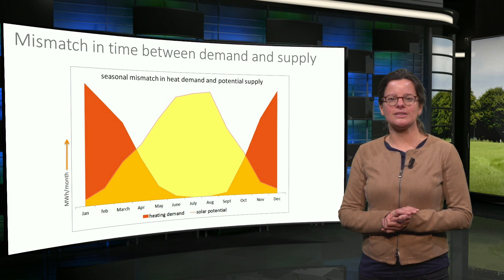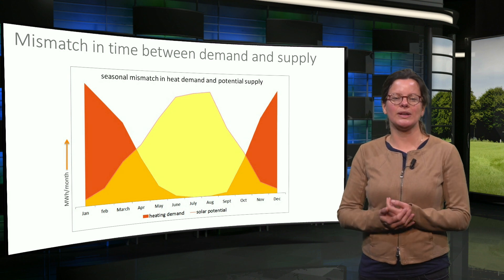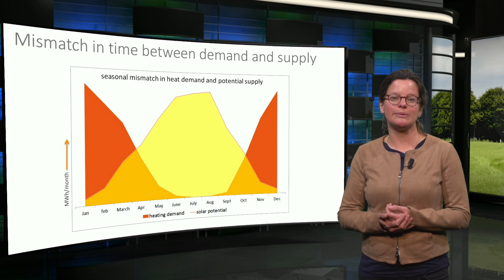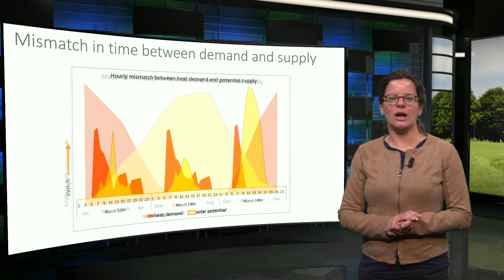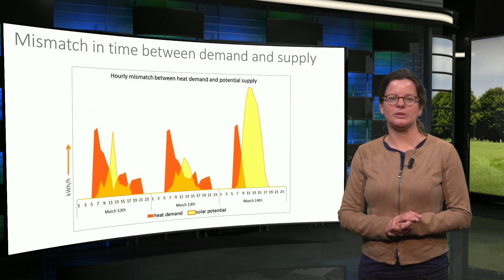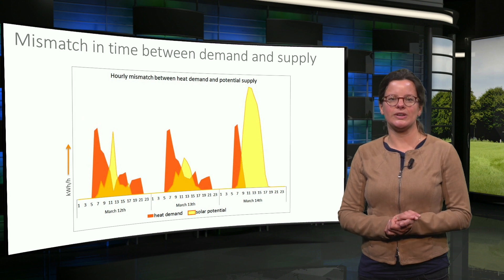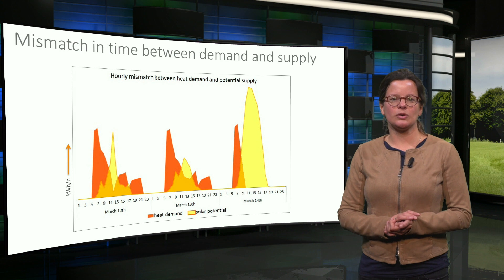A very clear example is the seasonal mismatch between heating demand in a relatively cold climate and the solar energy potential in the same climate. But there are also hourly differences between demand and supply occurring each day, as is illustrated in this figure.